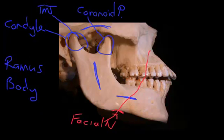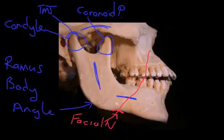The other feature often talked about is the corner here, and this corner is called the angle of the mandible. That forms the corner between the ramus and the body. And then we have this little piece that sticks out to form your chin, and it's sometimes described as the mental process.